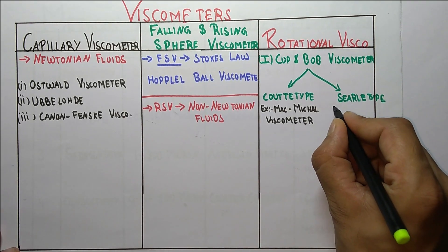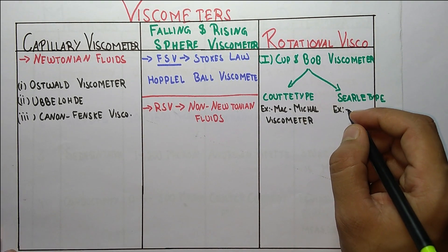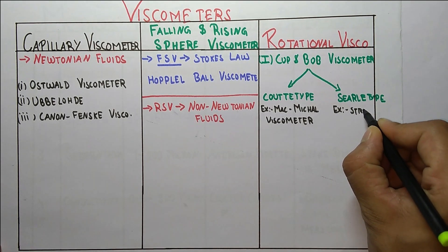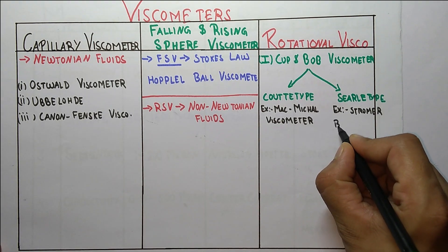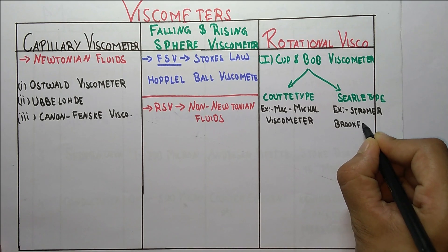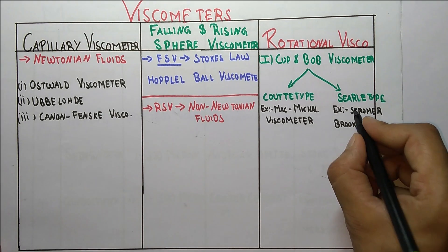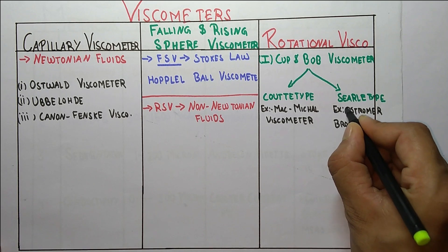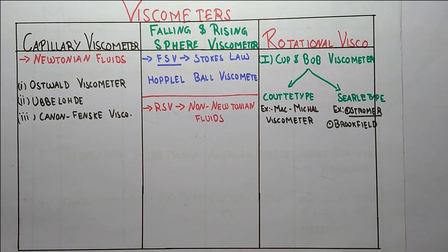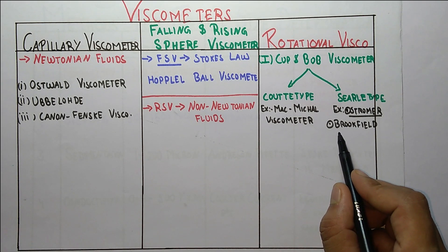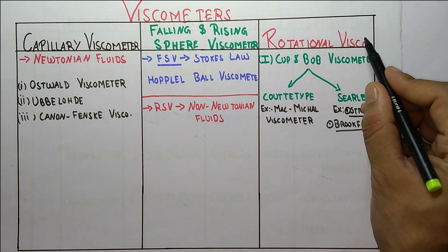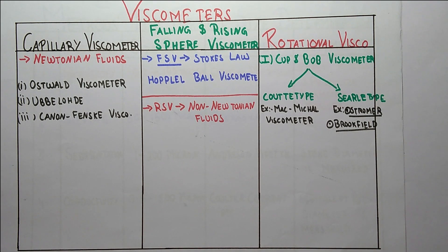The examples of the Searle type are the Stormer viscometer and the Brookfield viscometer. In fact, a question was asked in the 2017 exam: which type of viscometer is the Brookfield? The answer is rotational viscometer. The second subtype of rotational viscometer is the cone and plate viscometer.